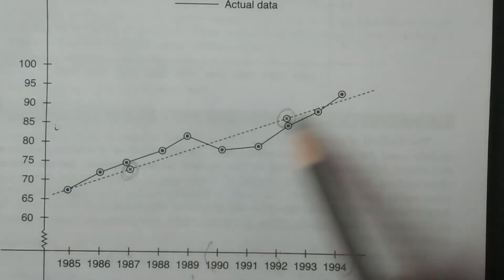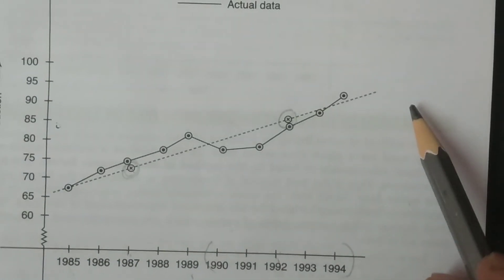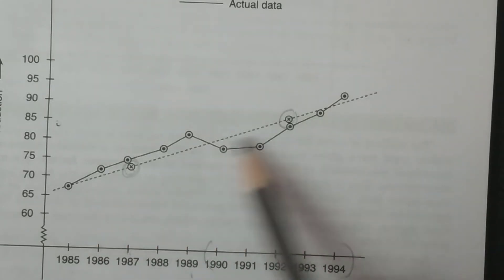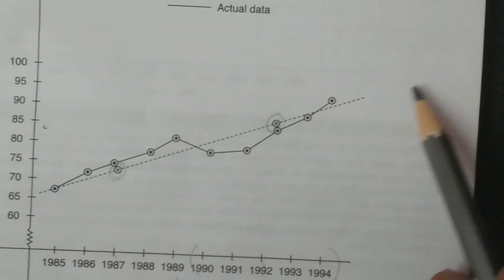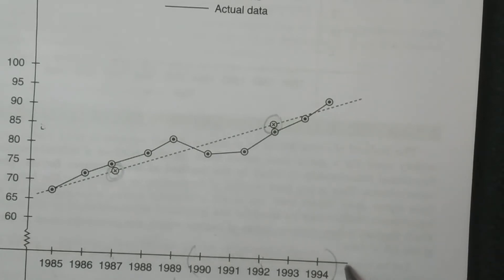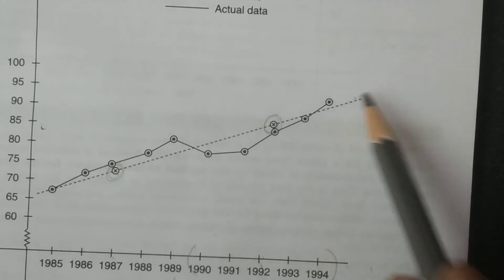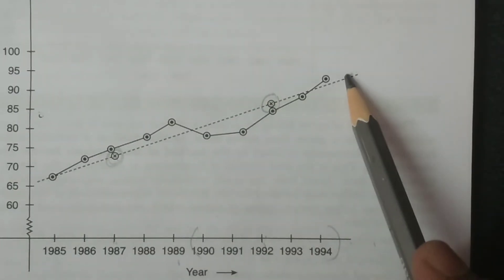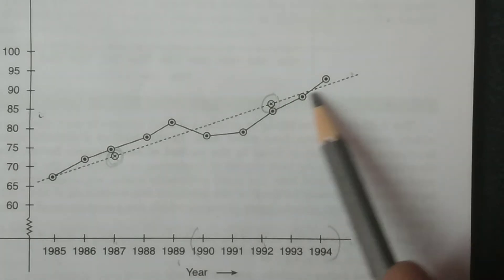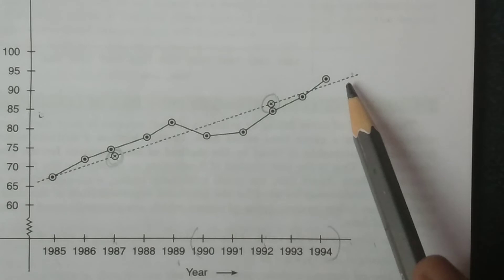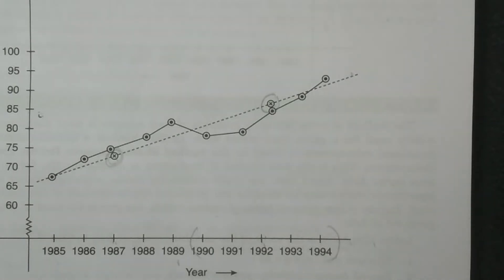You have to join these two points and you will get the straight line. We can also obtain trend values from this graph by extending this particular line. For example, if you want the production in 1995 or 1996, it can be estimated by extending this line and making the prediction. That is the procedure of semi-averages.